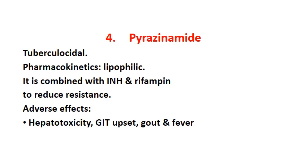The fourth first-line drug is pyrazinamide, which is tuberculocidal. Its pharmacokinetics are lipophilic, making it effective against most types of TB, and it is commonly combined with INH. Starting with three drugs then adjusting the regimen helps reduce resistance. Adverse effects include hepatotoxicity, GIT upset with nausea and vomiting, hyperuricemia causing gout, and sometimes fever — all important to know since this drug is used for long-term therapy.